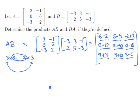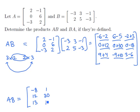If we clean up these values, we find that the matrix AB equals the 3 by 3 matrix. Working through the entries: minus 8, 12, 13, then 1, 31, 1, then minus 18, and minus 3.